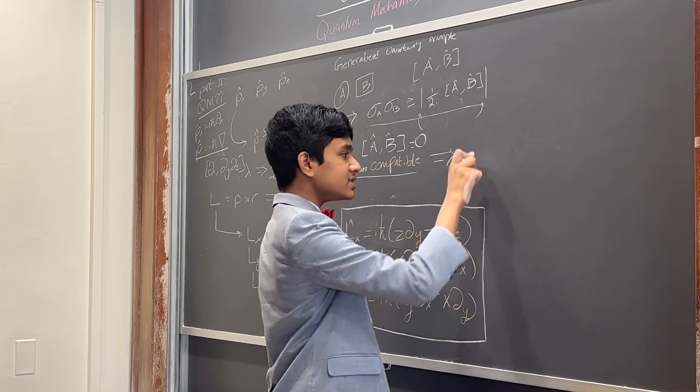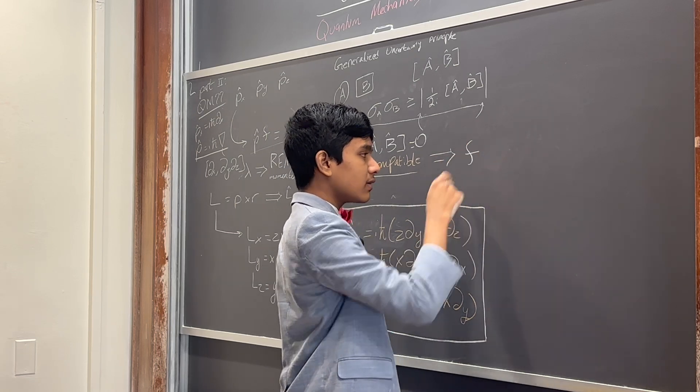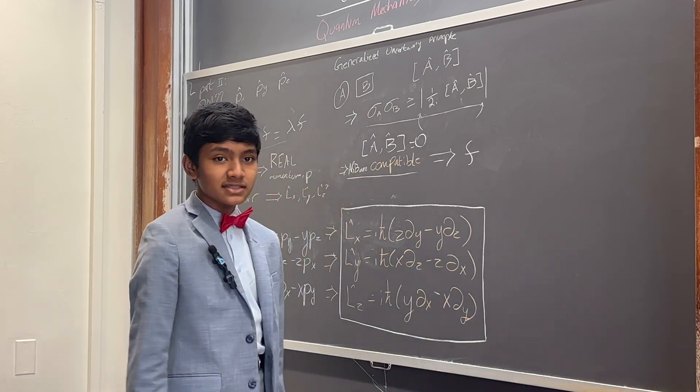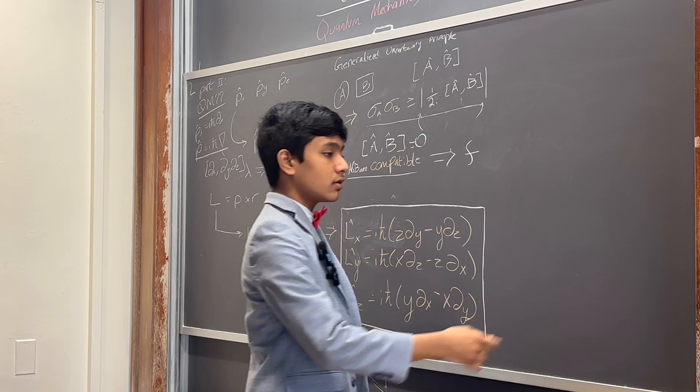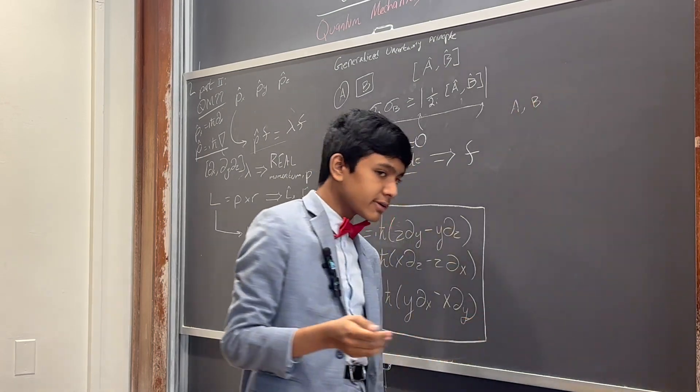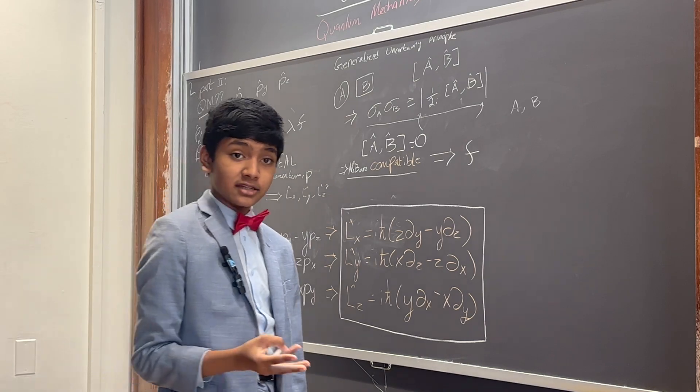An eigenfunction f that satisfies both. That is, we can essentially find a reality where we can nail down the values of both a and b to 100% precision without any uncertainty.